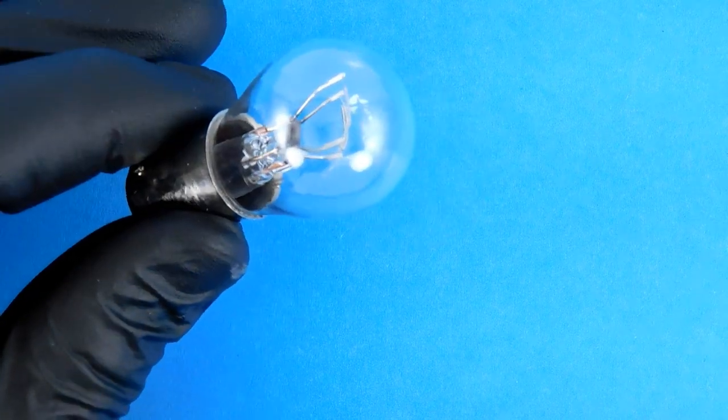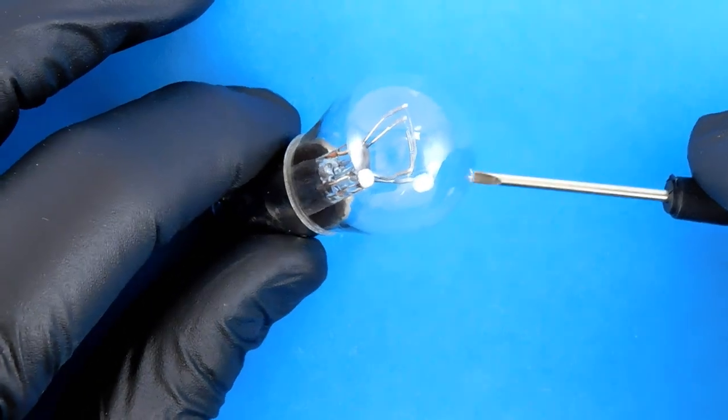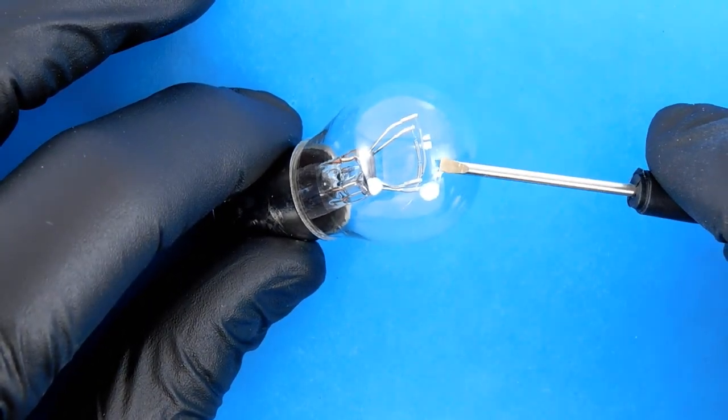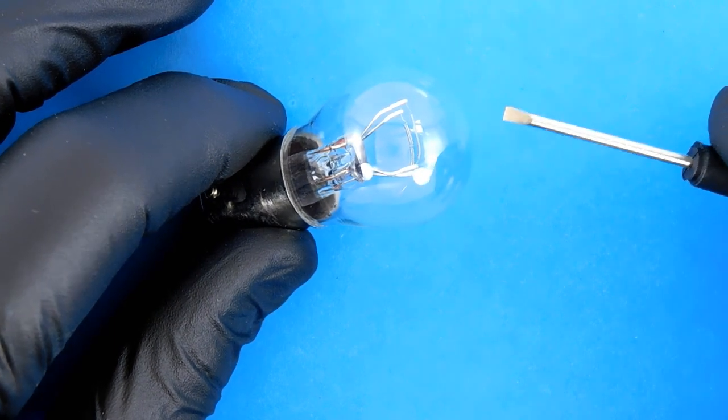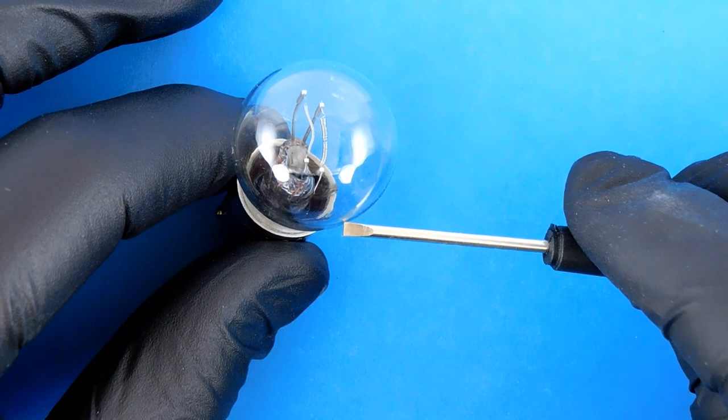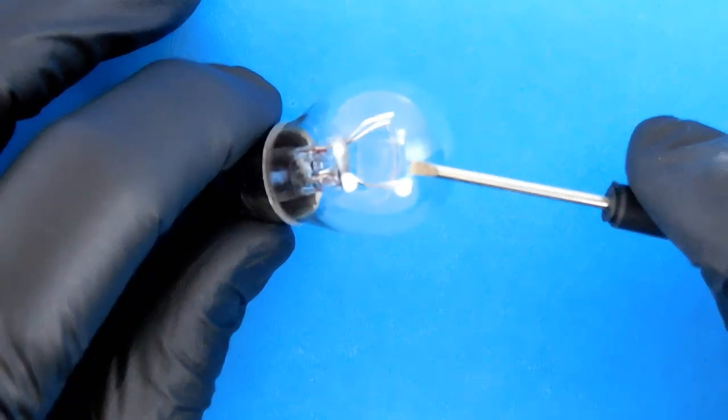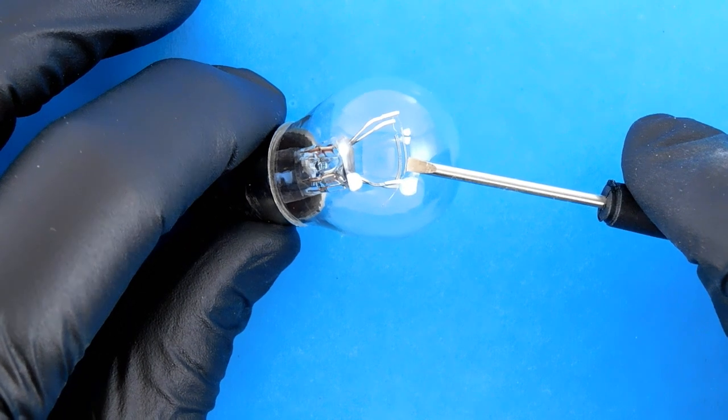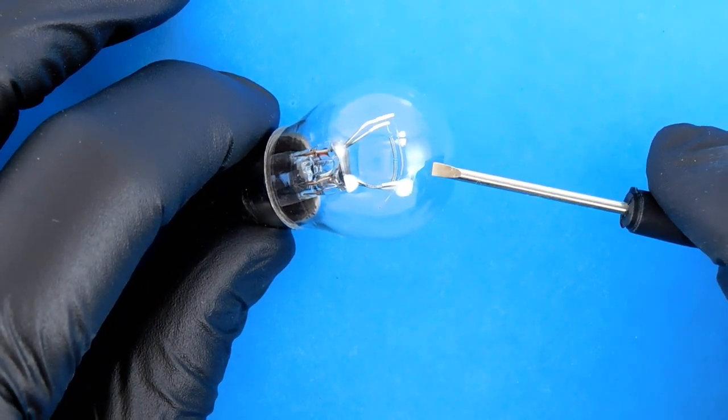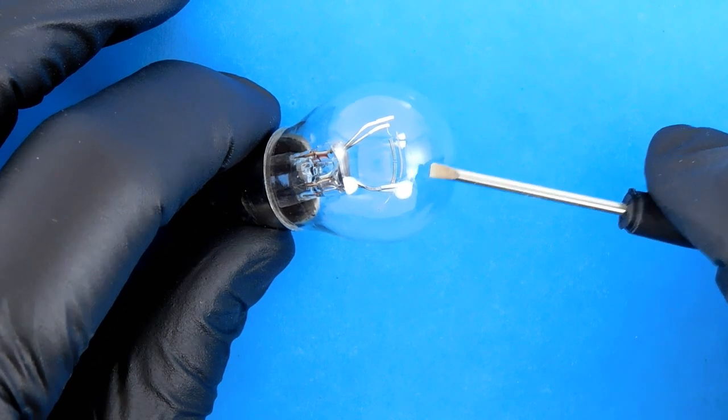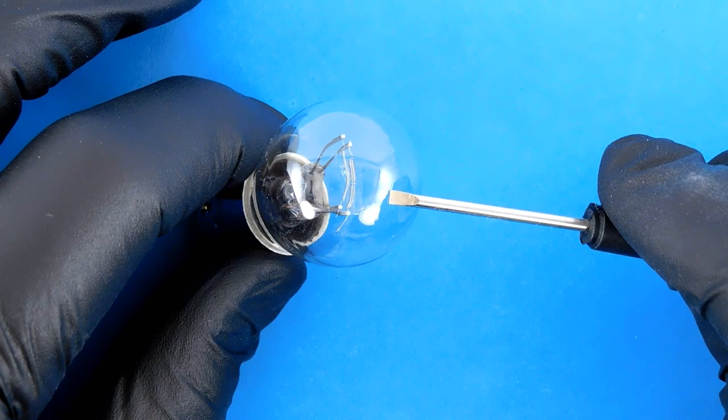This is a very common type of dual filament bulb. It's designated as an 1157, and it has two filaments. One large coiled filament, closer to the bottom, and one smaller coiled filament, which is closer to the top. Each can be lit individually. The smaller filament is used for a tail light, and the large filament is used for brake and turn signal light.